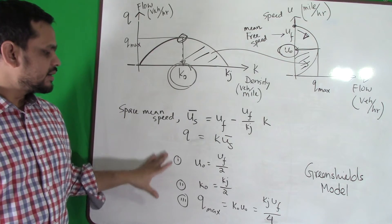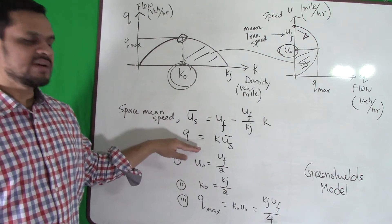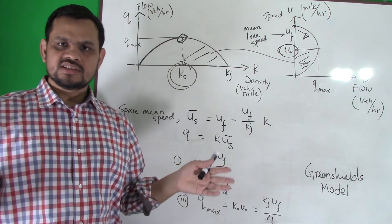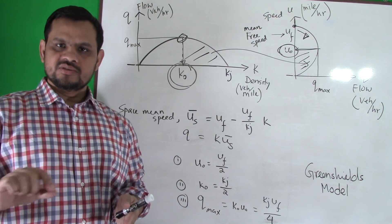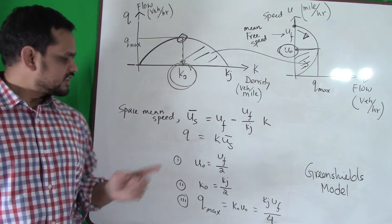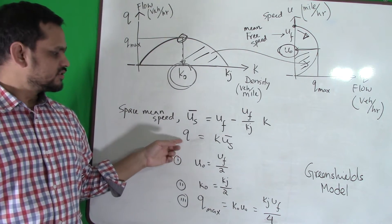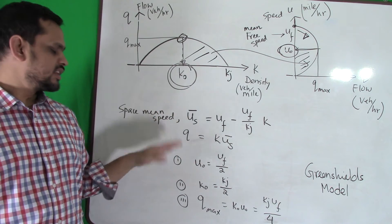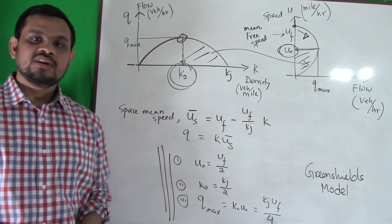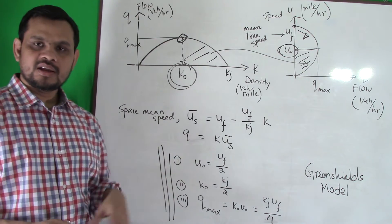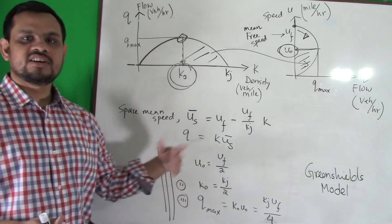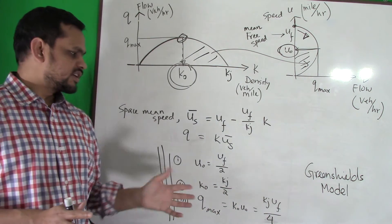This model gives us these theoretical outputs. The calculation steps are: since q is a function of k, we differentiate, set it to zero, find the value of k, insert it to find q-max — same standard process. Make sure you can use it. It is in your FE exam as well. In every exam, these symbols may be different, but as long as you know the concept, you can use it.